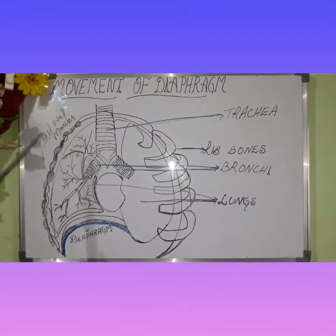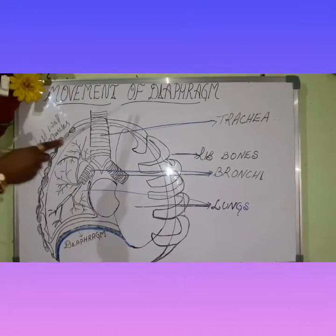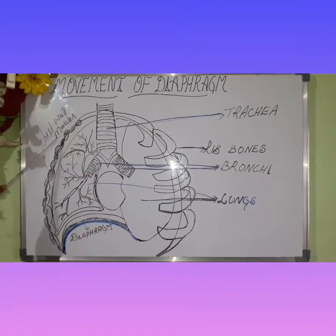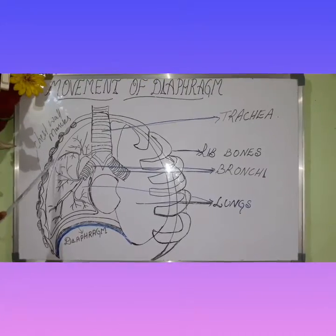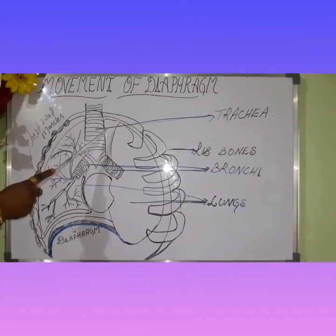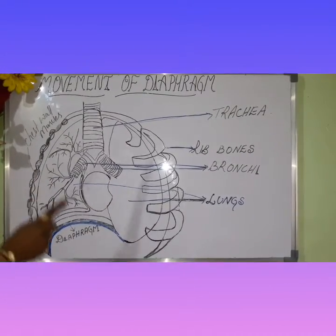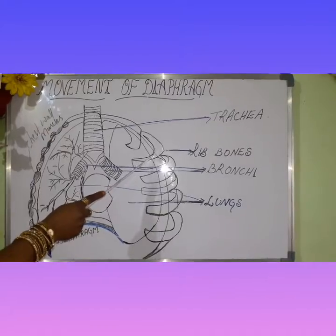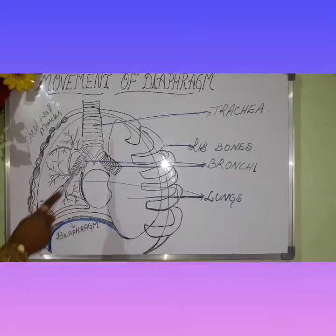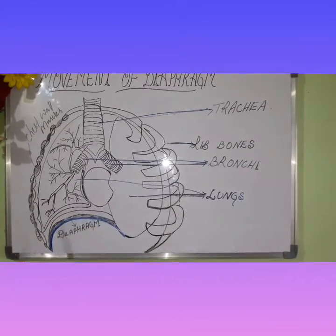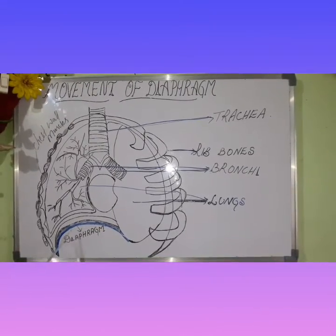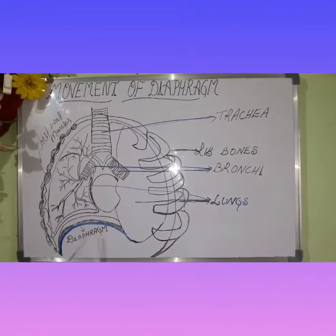Now let's look at the diagram showing the movement of the diaphragm. Here we can see the chest wall muscles. The trachea is also called the windpipe. These are the rib bones. The trachea is branched into two bronchi. This region we call the diaphragm, and these are the lungs.